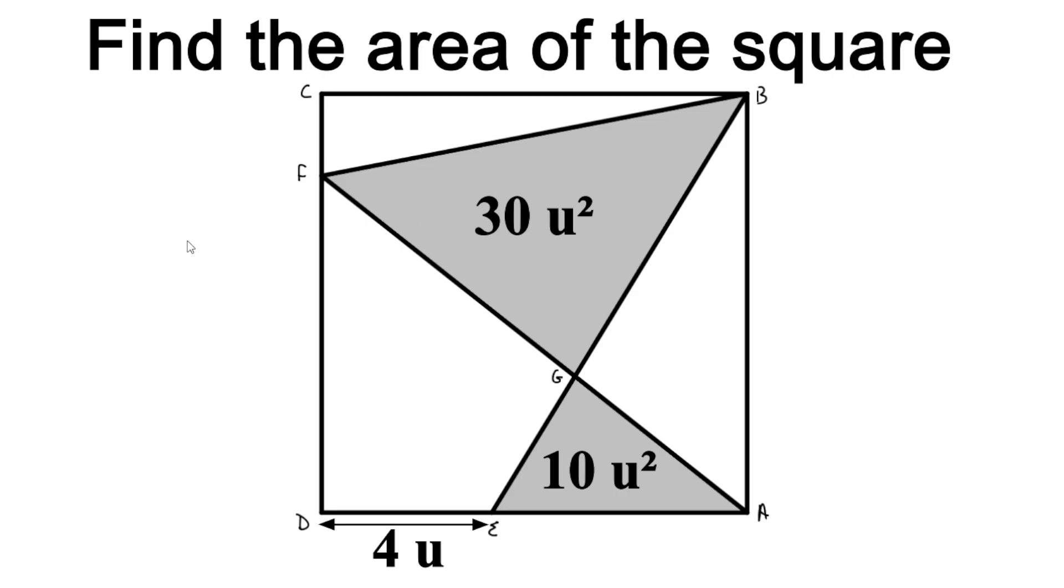Now the information that we have: we have the area of this triangle here, triangle BFG, and that area is 30 square units. We also have the area of triangle AEG, which is 10 square units. Along with that, we also have the length of segment DE, which is 4 units.